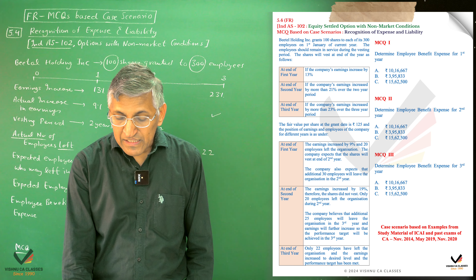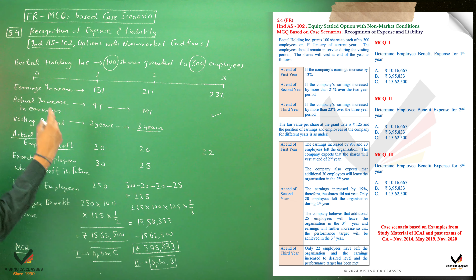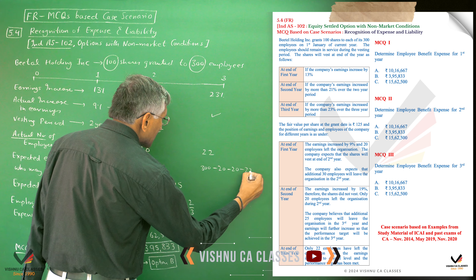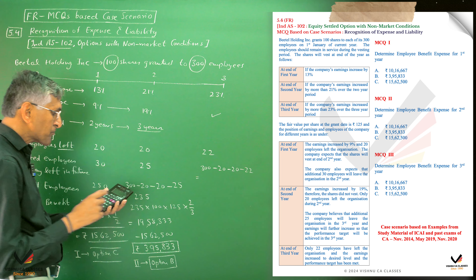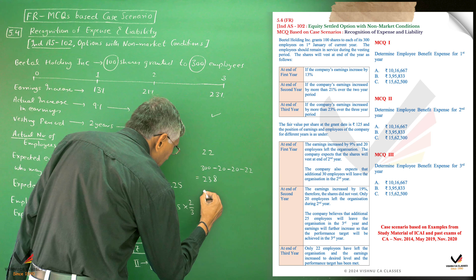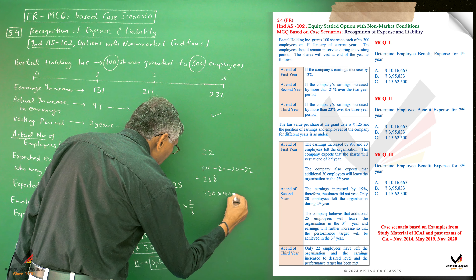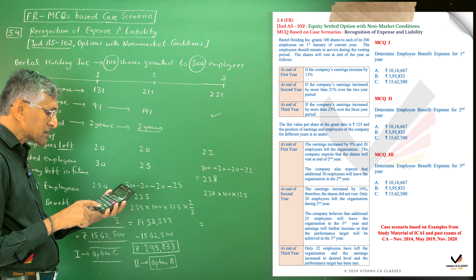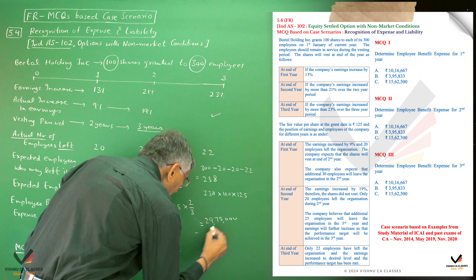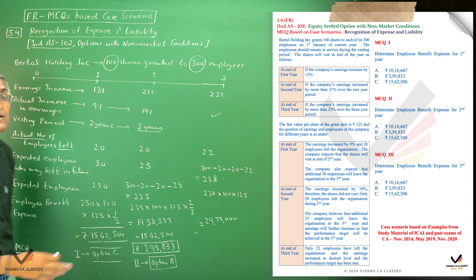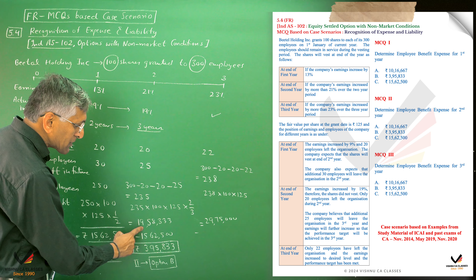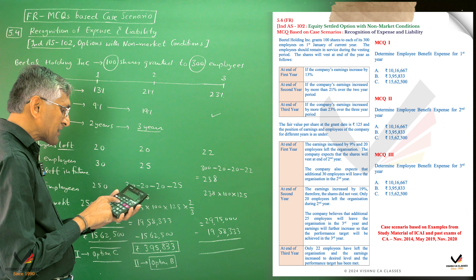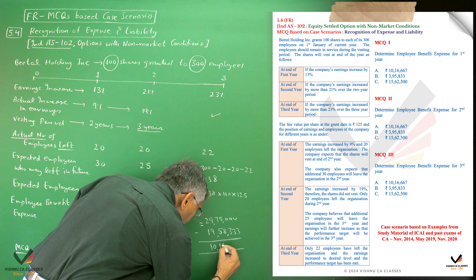For MCQ 3, we calculate employee benefit expense for Year 3. Total employees in Year 3 are 278. Cumulative expense = 278 × 100 × 125 = 3,475,000. Total already recognized in Year 1 and Year 2 is 1,562,500 plus 395,833 = 1,958,333. Therefore, Year 3 expense = 3,475,000 minus 1,958,333 = 1,016,667. The correct option is option A.